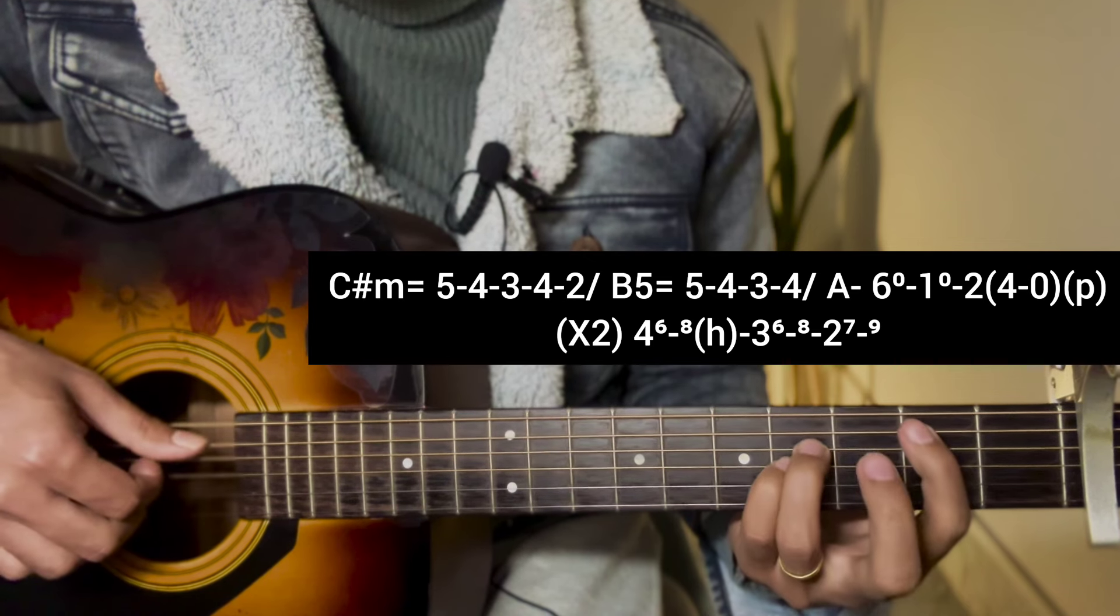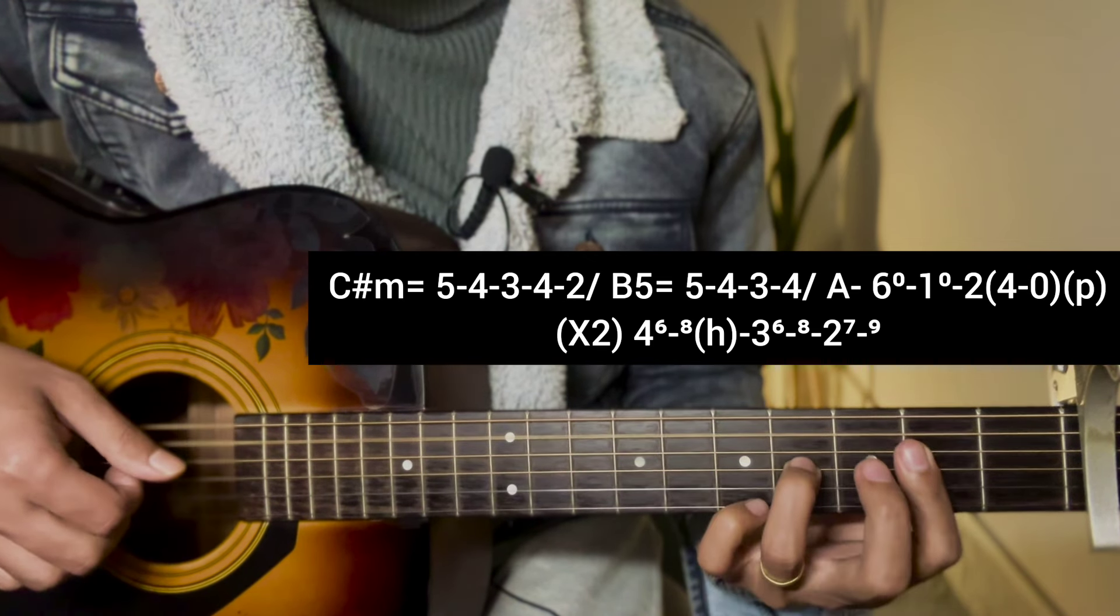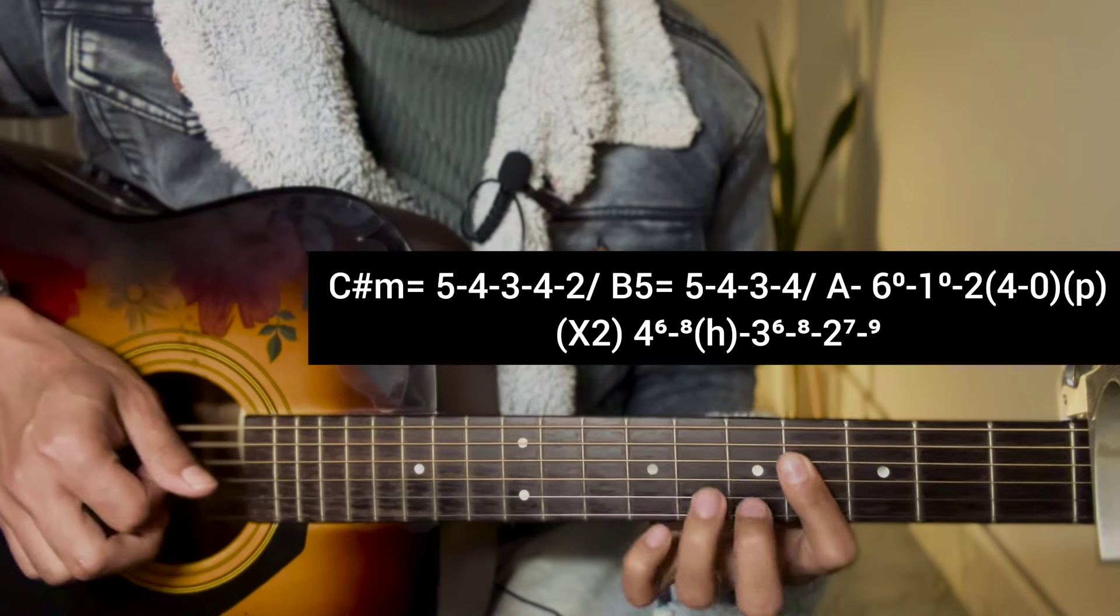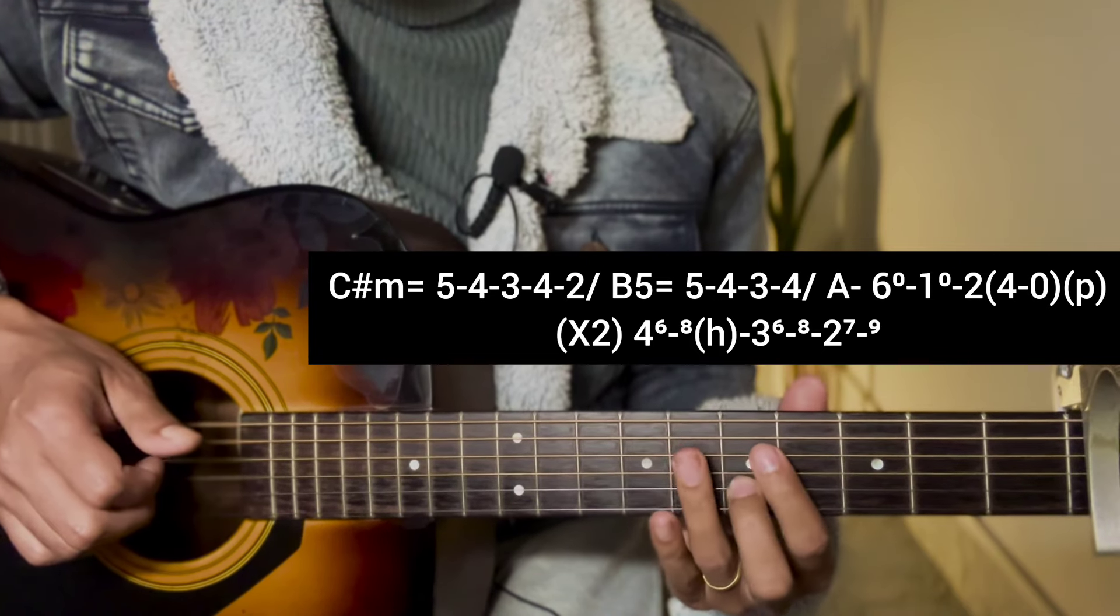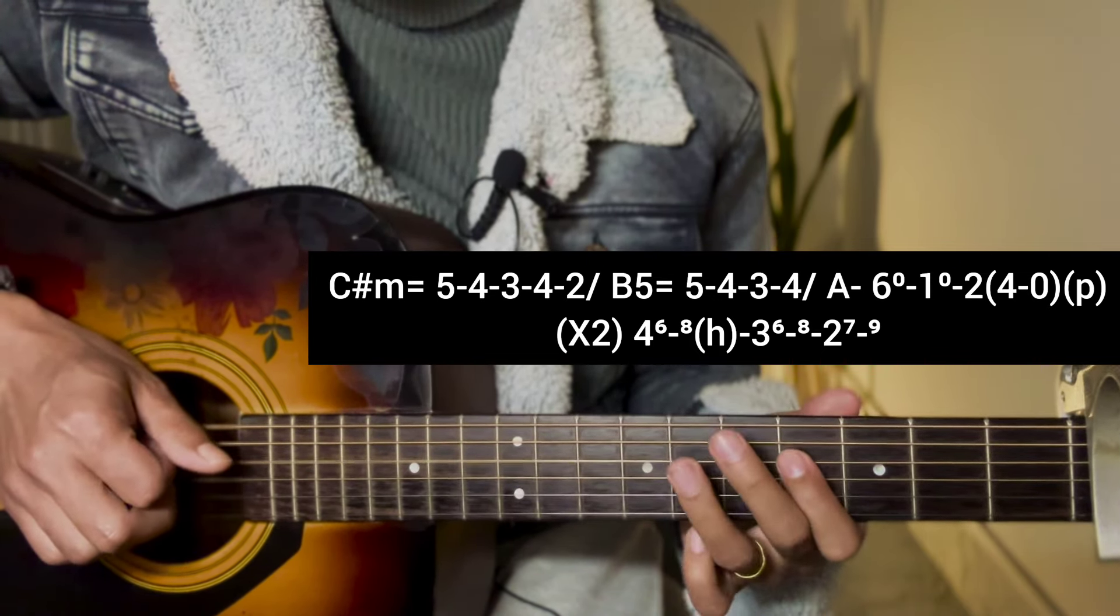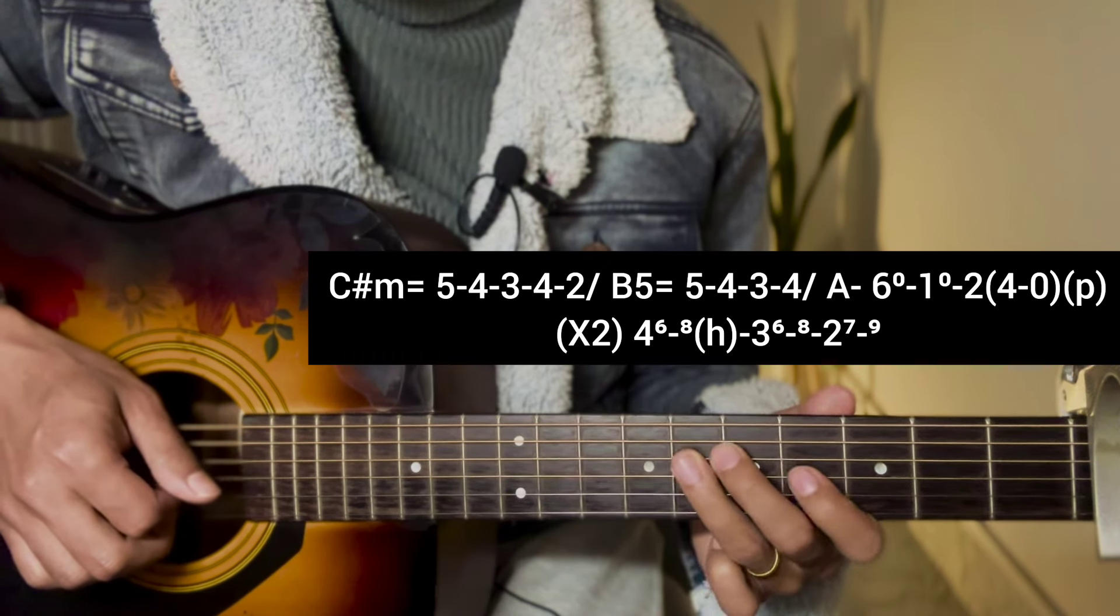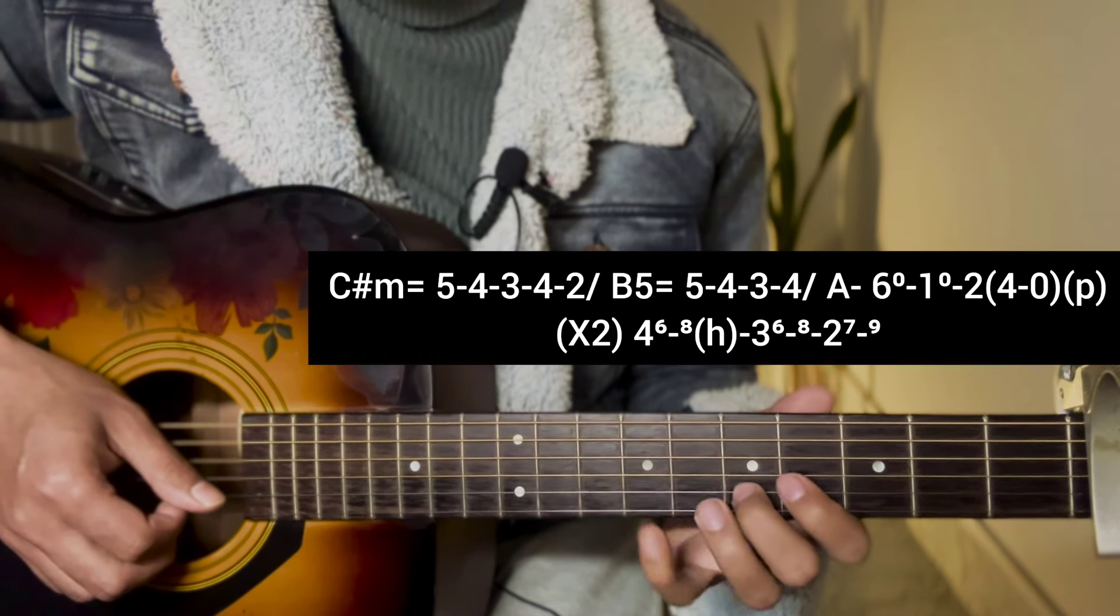B5, A, same thing. I'll do this: 4th string 6-8 hammer-on, 3rd string 6-8 hammer-on, 2nd string 7 hammer-on. Listen to this part.